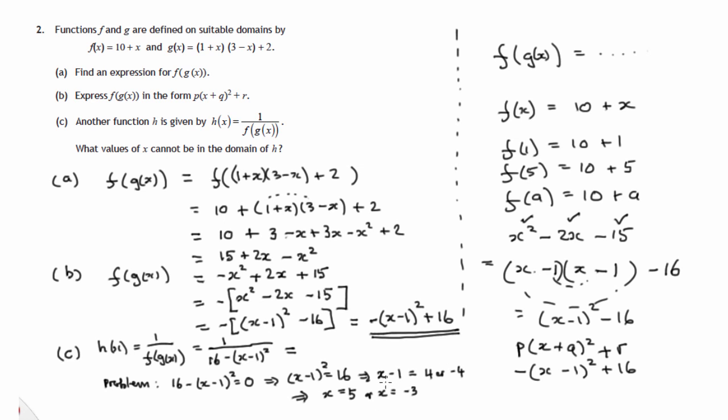Let's check it. Negative 3 minus 1 does give you negative 4. So the question says, what values of x cannot be in the domain of h? So x equals 5, or x equals negative 3 cannot be in the domain of h. Otherwise we would be dividing by 0.